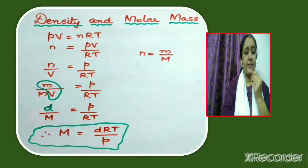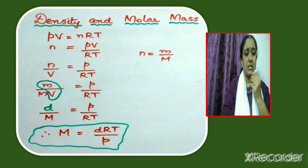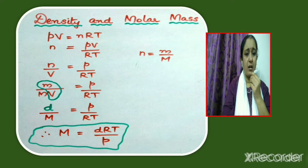How can we derive an expression which shows the relationship between molar mass and density? For that, consider the ideal gas equation: PV = nRT. From that, we can write the number of moles n = PV/RT, or n/V = P/RT.